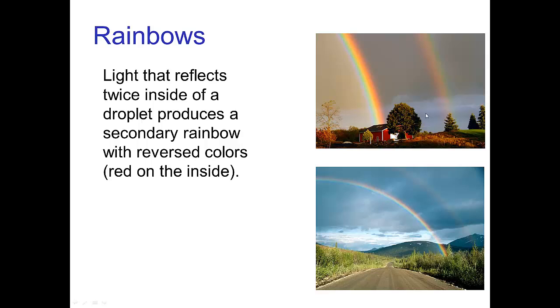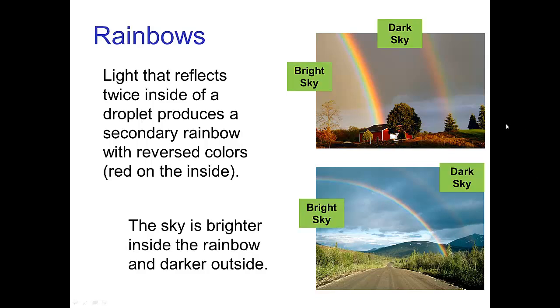Even more significant is that if you look carefully, you realize that the sky inside the arc of a rainbow is brighter than the sky on the outside. This is part of the focusing effect due to the rainbow.